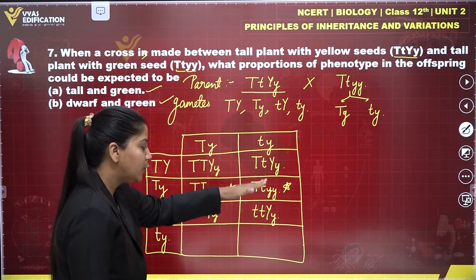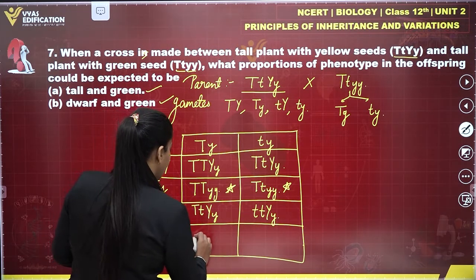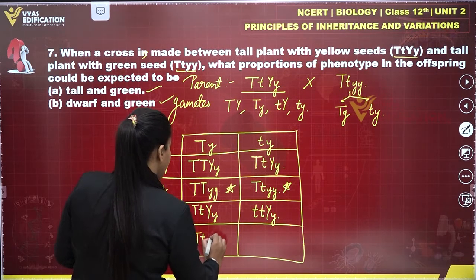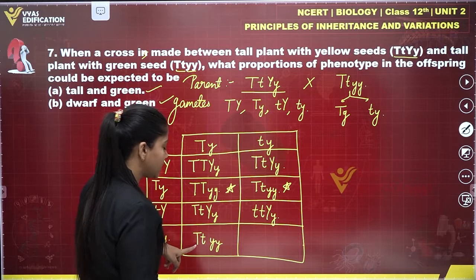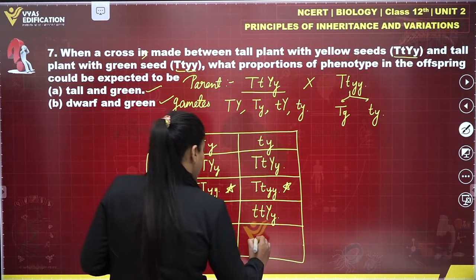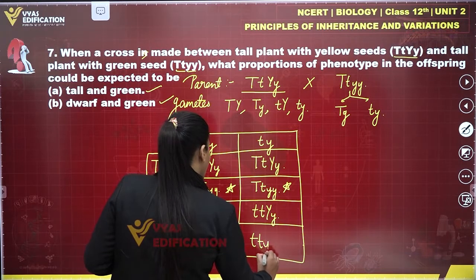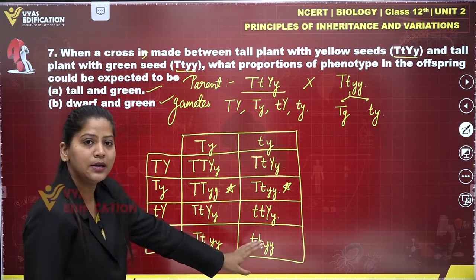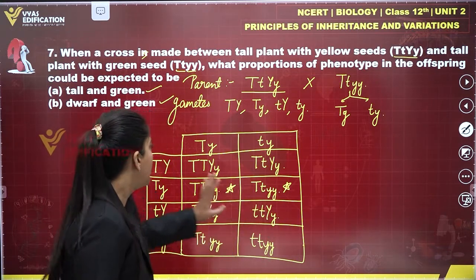Continuing: ttYy — a dwarf plant with yellow seed. Then TTyy — a tall plant with green seed. Finally, ttyy — a dwarf plant with green seeds.